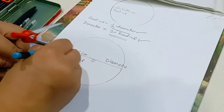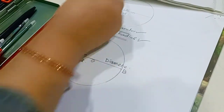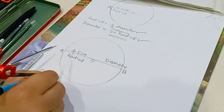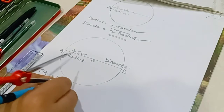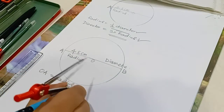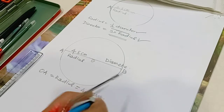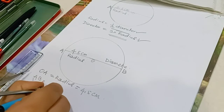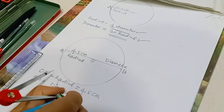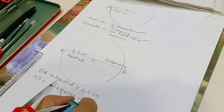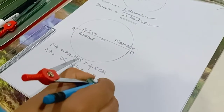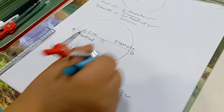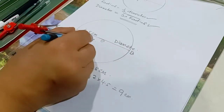Diameter A, B, O, A. Here OA is radius 4.5 cm, and AB is the diameter — 2 multiplied by 4.5, that is 9 cm. This is the diameter, and OA is the radius.